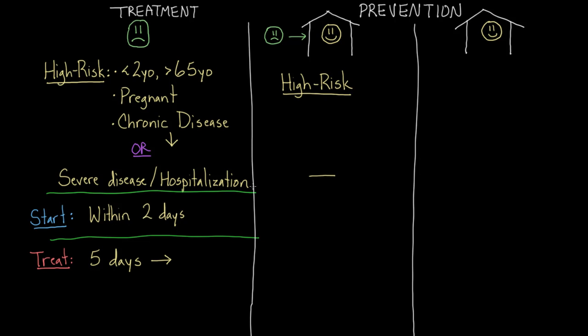This whole bit about severe disease or hospitalization doesn't really apply because they're not sick. They're obviously not going to have severe disease or hospitalization already. What about this question of when would I start treatment? Well, ideally, again, it's going to be within two days. So within two days of their exposure. We call the visit, or whoever kind of made them worry that they might get the flu, we call that the exposure. And so really you want to start treatment within two days, and you also want to start prevention within two days.